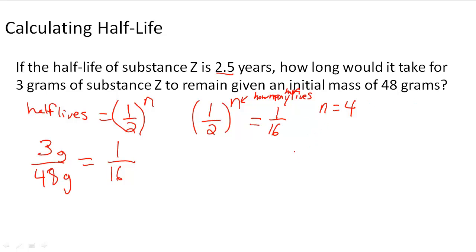So all I have to do is now multiply 4 times 2.5 which is 1 half-life and I get 10 years. So in 10 years, it would take 10 years for 3 grams of the substance Z to remain. So 10 years is the answer to this problem.